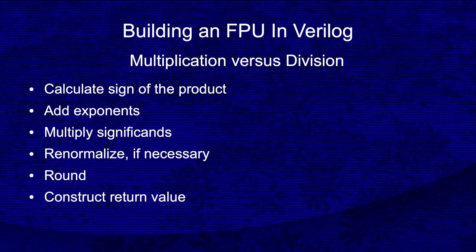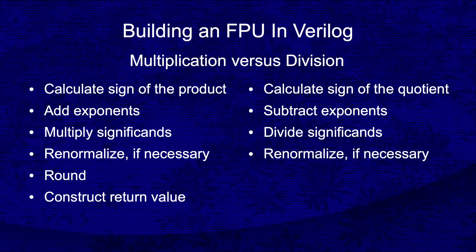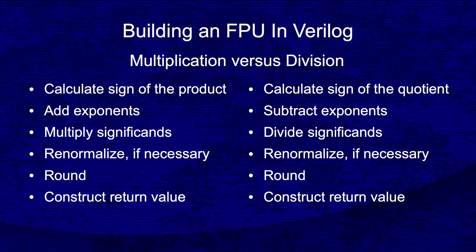Floating point division mirrors these operations. Calculate the sign of the quotient, subtract the exponent of the divisor from the dividend, divide the significand of the divisor into the significand. If necessary, renormalize the quotient of the significands and subtract 1 from the difference of the exponents. Round the significand and construct the 16, 32, 64, or 128-bit return value.